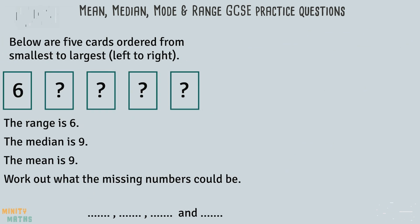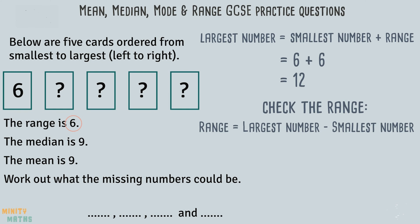Here is a similar question to the last, except this time we are only given one of the numbers, but more clues. We need to find the missing four numbers. Firstly, we are told that the range is 6. We are already given the smallest number, as the cards are arranged in ascending order. So we can add the range of 6 to the smallest number, also 6. This means the largest number will be 12. This gives us a range of 6.